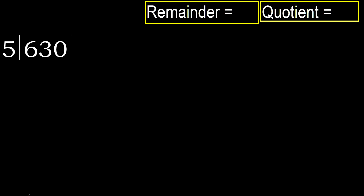630 divided by 5. 6 is not less, therefore work with 6. 5 multiplied by which number is nearest to 6, but not greater? 5 multiplied by 2 is 10 — 10 is greater. Multiplied by 1 is 5 — 5 is not greater, ok. Subtract: 6 minus 5 is 1.